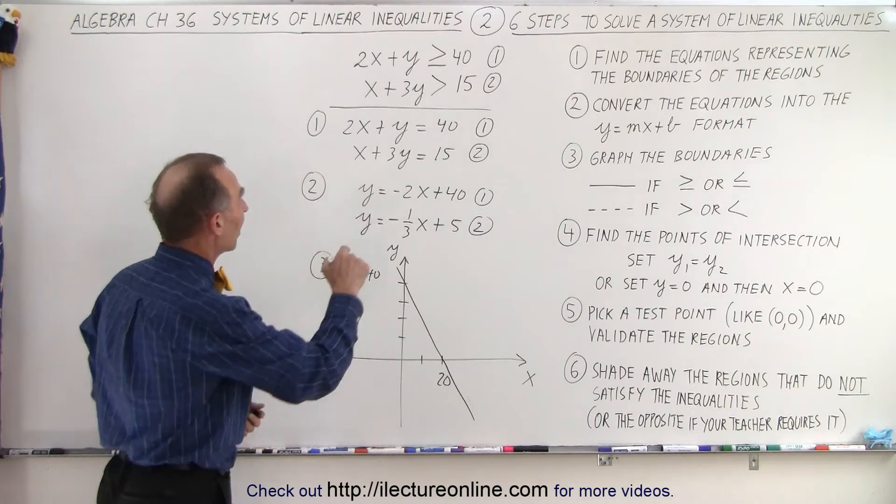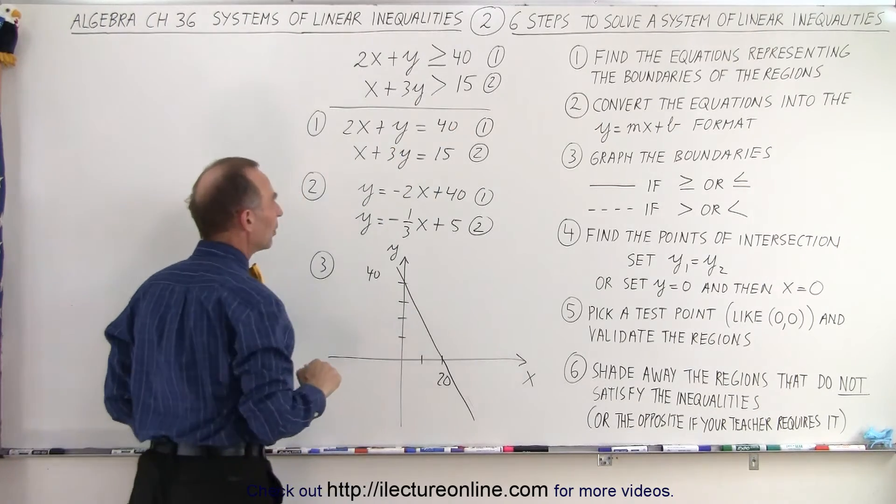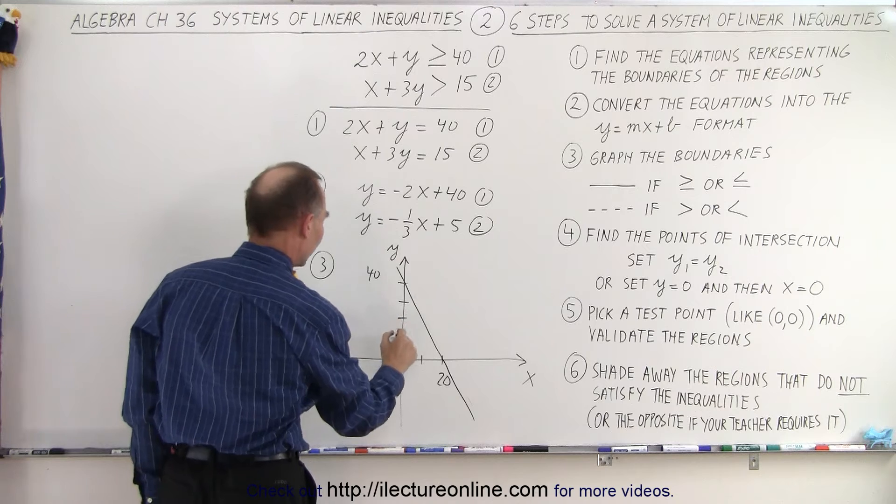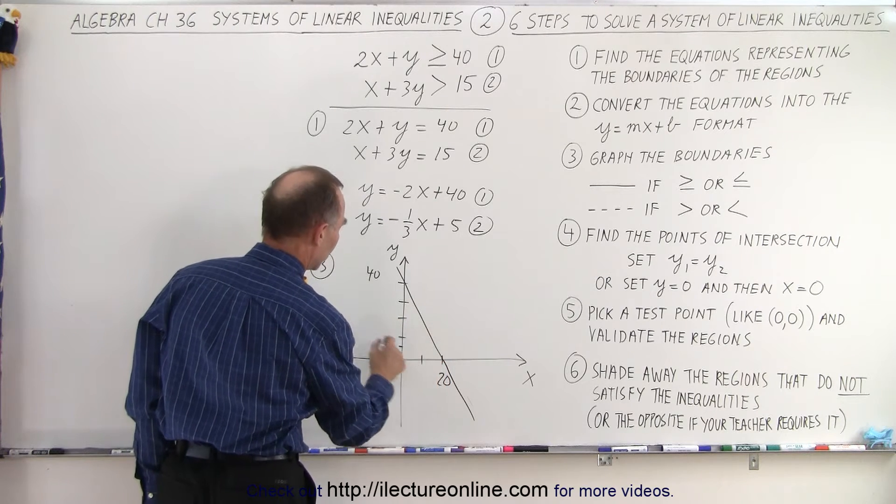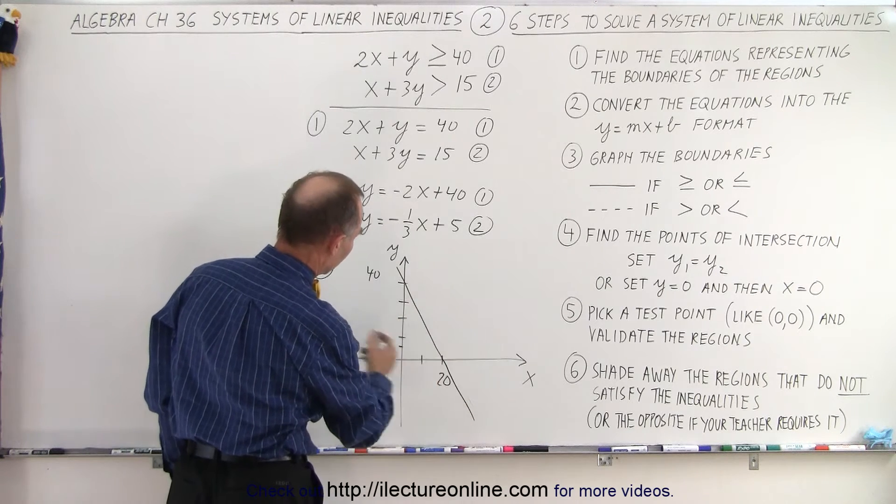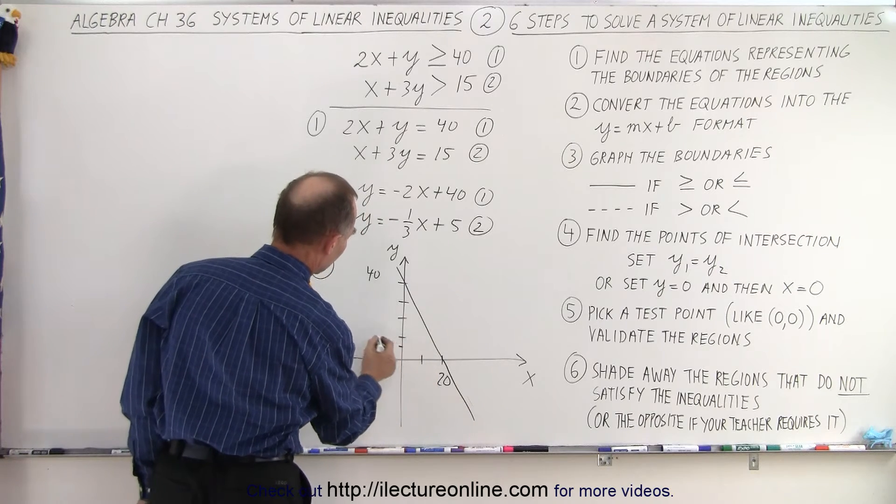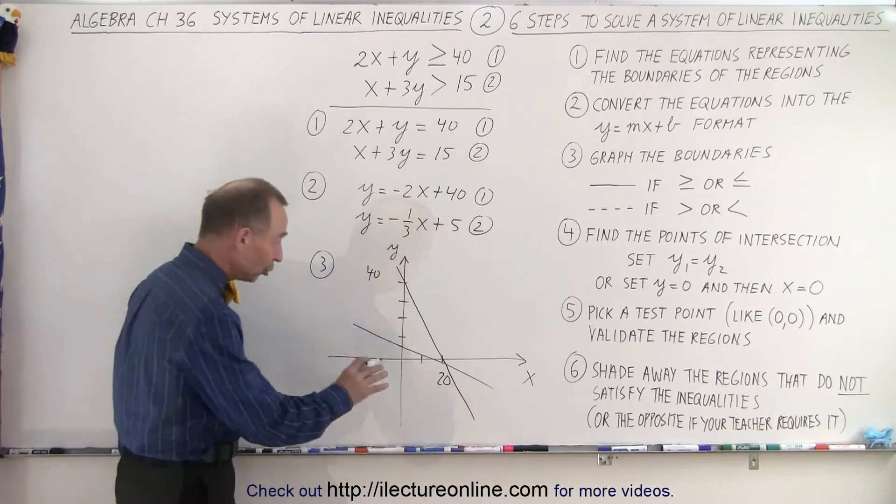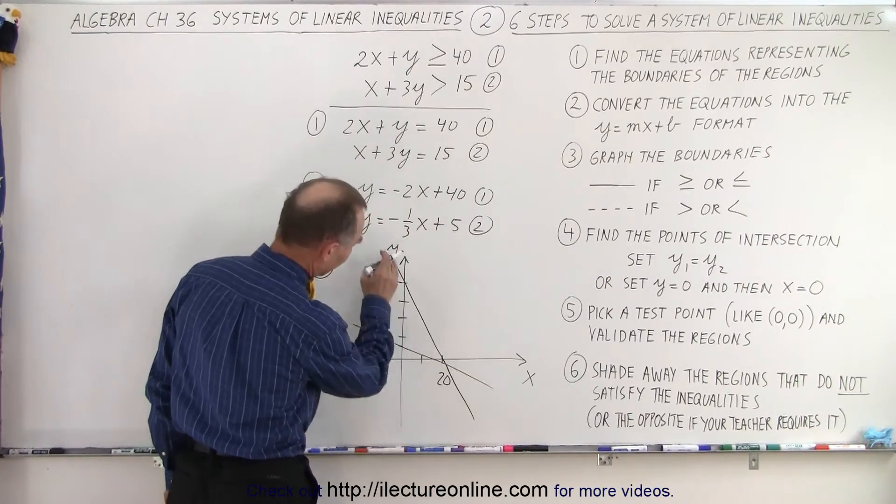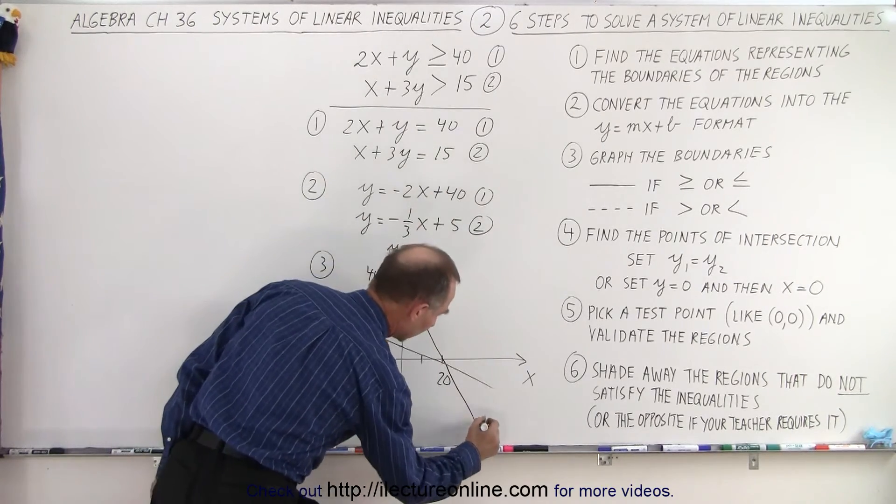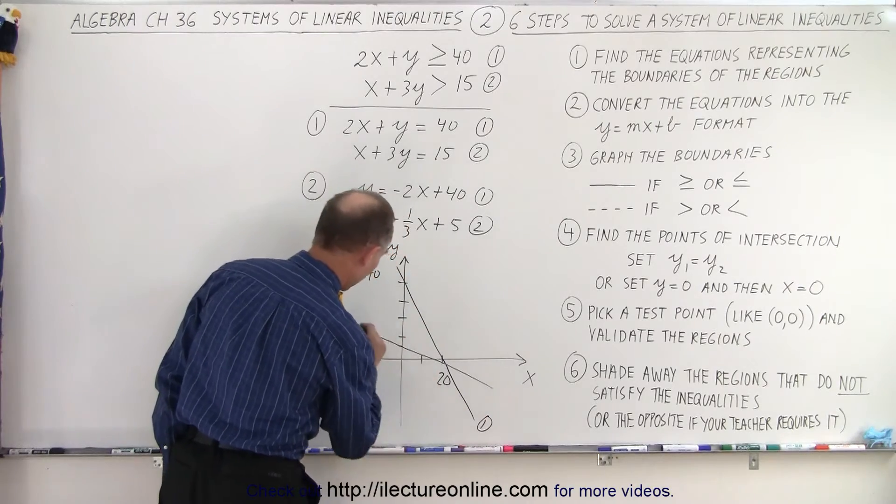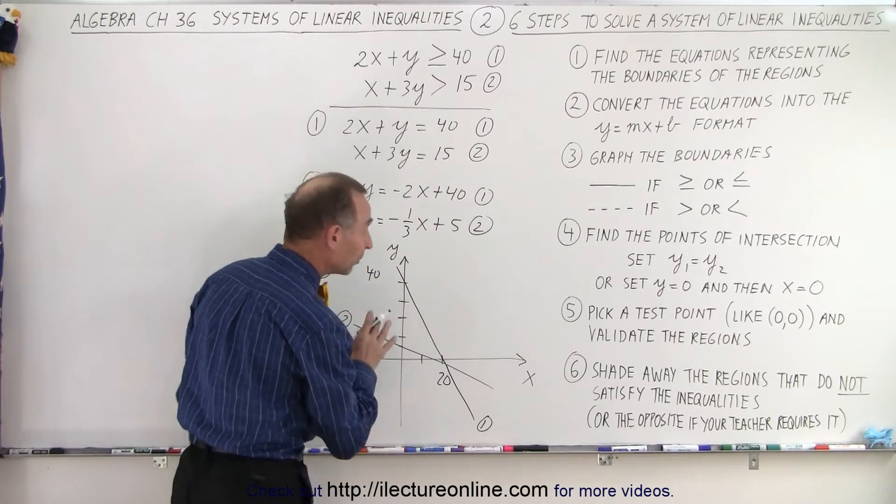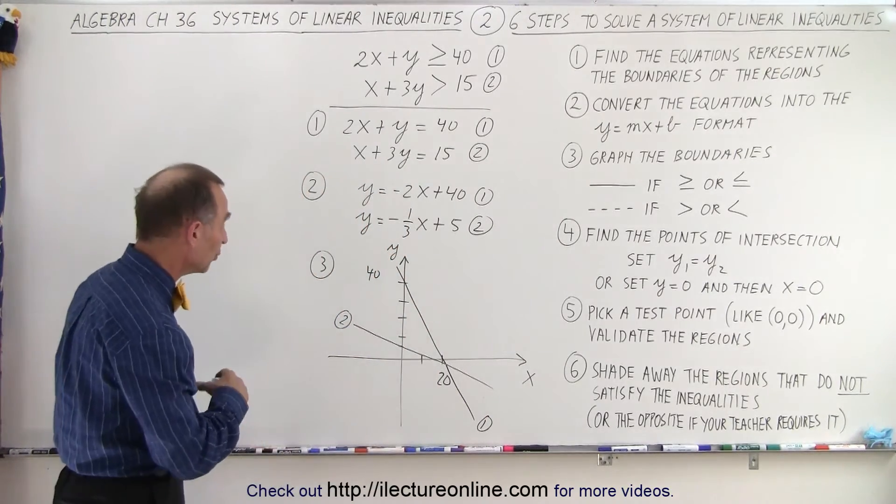And the next line, we're going to draw a dashed line because it doesn't include the equal sign. Plus 5, which is right here, and minus a third. And so, well, let's see here. We're not quite sure where that goes. So, okay, now what we should do is we should label these lines. So this is line number one. And this here is line number two. And that comes in really handy later when we try to do the test points.